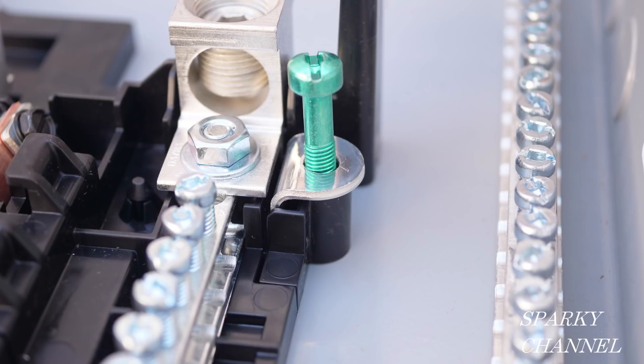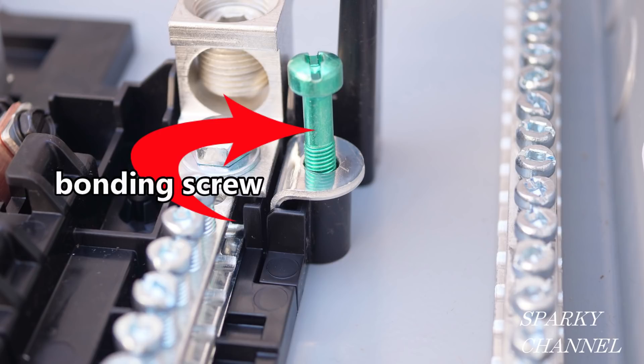So how does this green screw in the Siemens load center relate to the bonding strap in the Murray load center? The green screw is called a bonding screw and it has the same function as the bonding strap, but it's activated in a different way.